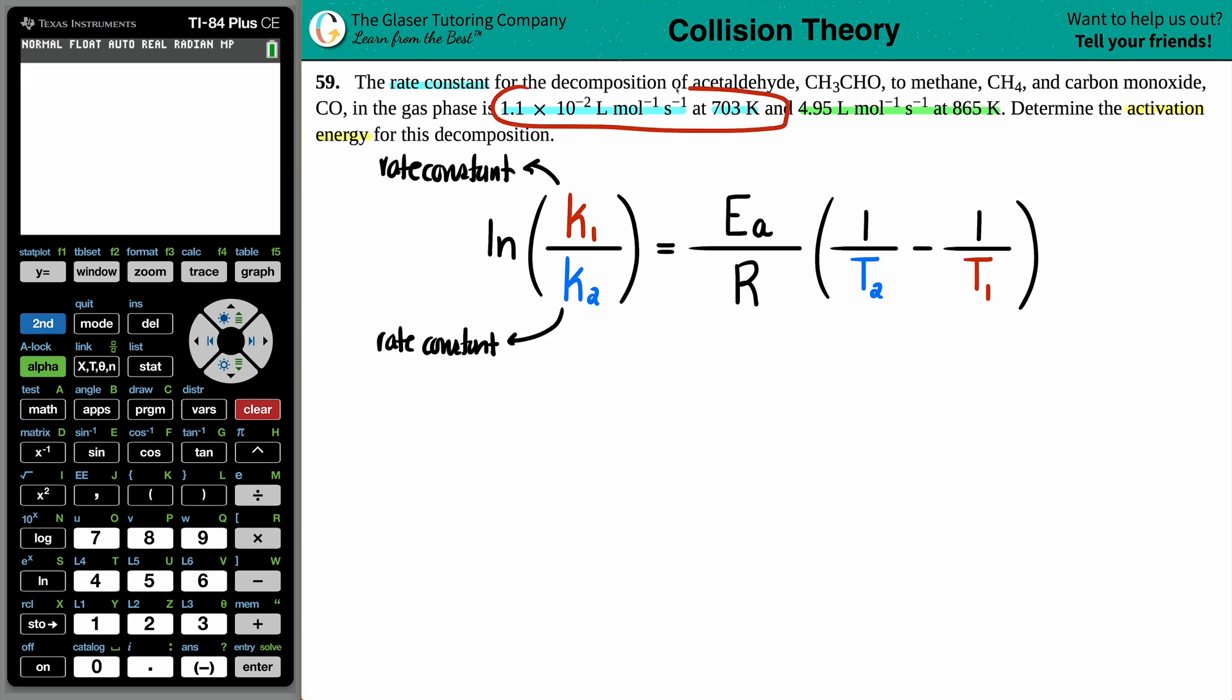Let's color this pair in red. We have the one rate constant is 1.1 times 10 to the negative second. In this case, I don't really care about the units, but it's liter per mole per second. That's the same thing as saying molarity to the minus one second to the minus one. Can you tell me what order this reaction is by looking at those rate constant units? Did you say second order? If you said second, that's correct. With that rate constant comes this temperature. They told us that one was 703 Kelvin.